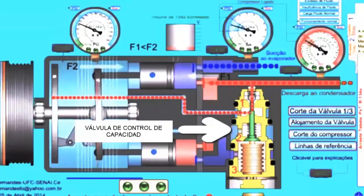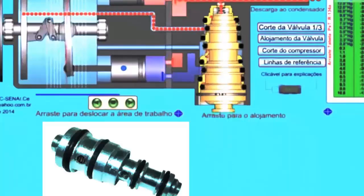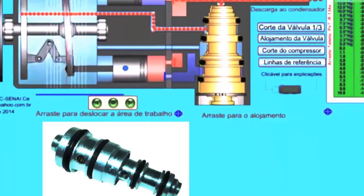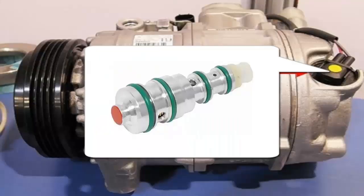To do this, the system's refrigerant must be recovered and the regulation valve, which is often accessible externally on the compressor, can be replaced. In some models, it is not necessary to remove the compressor from the system.